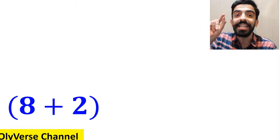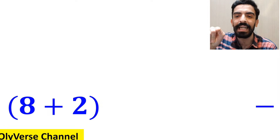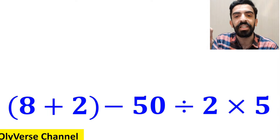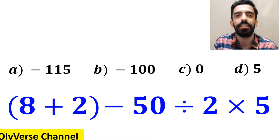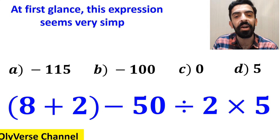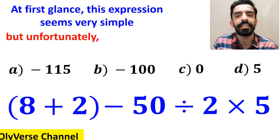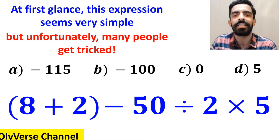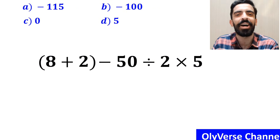What is the value of the expression 8 plus 2 inside the parentheses, then minus 50 divided by 2 multiplied by 5? Which option do you think is the correct answer to this question? At first glance, this expression seems very simple, but unfortunately many people get tricked. Let's take a closer look and solve it together.